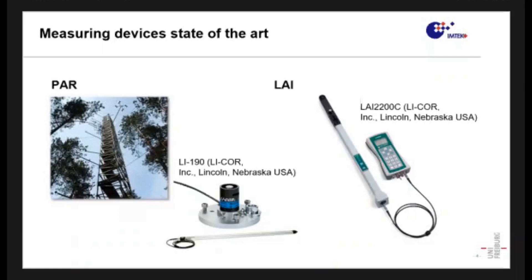For leaf area index is very common the LI-2200, which as you can see is an instrument that is mainly meant for an operator which has to walk through the forest.